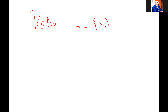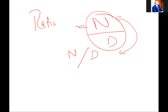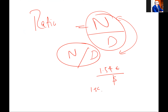Let me give you a fresh start on ratios. We have a numerator and a denominator. There is no difference between writing the ratio as a fraction or as 'per.' So if I say 1.54 euro per dollar, it means 1.54 euro is the price of one dollar.